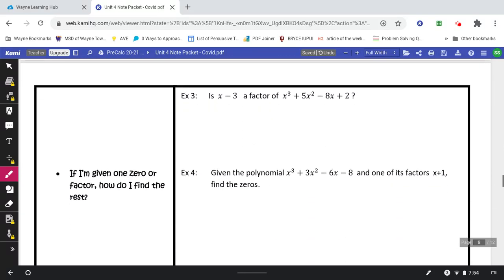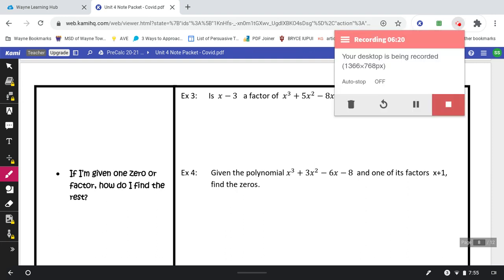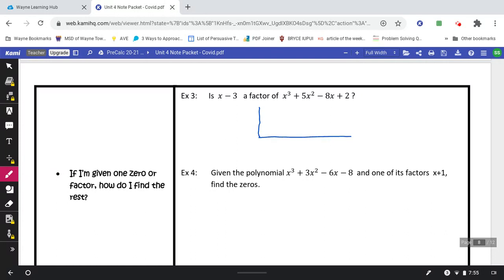Example number 3. This x minus 3 is a factor. It's asking, is this a factor? So your answer is either going to be yes, if you get a 0 at the end, or no if you don't. The setup should look like that. Start by dropping down that first 1. Multiply 3 times 5 to get 15. Add to get 8. Multiply 3 times 8, 24. Add those, 16. Multiply 3 times 16, 48. And add those to get 50.